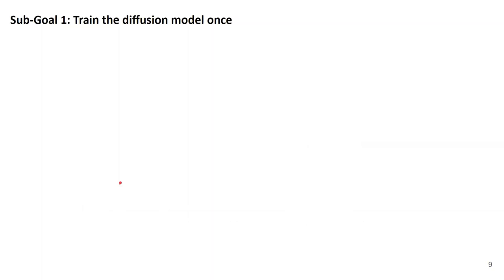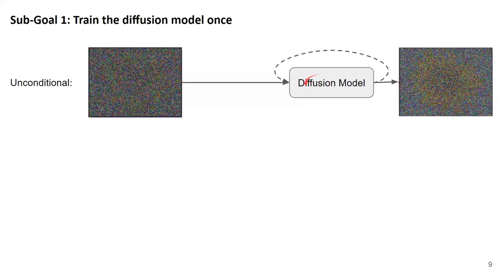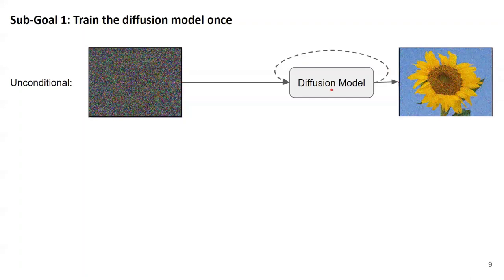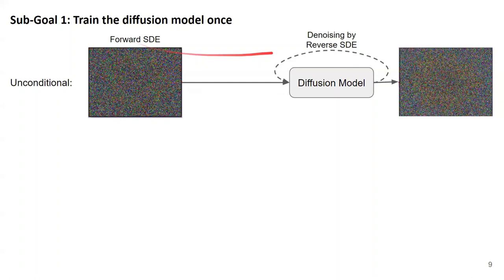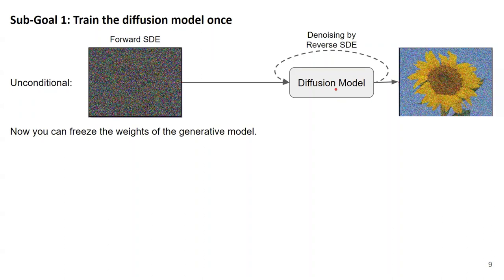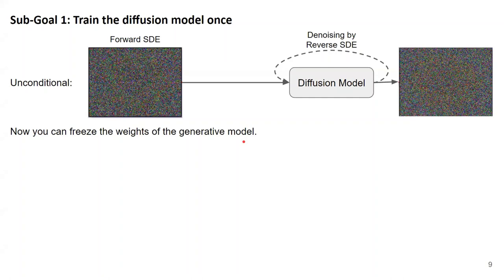The first sub-goal is training the diffusion model once. The authors suggest training the diffusion model unconditionally — you have your original images, you noise them, and you train the diffusion model to learn to denoise them. The only difference is that the forward noising process and the backward denoising process follow stochastic differential equations. Once trained, you can freeze the weights of this generative model and use it for all different tasks.